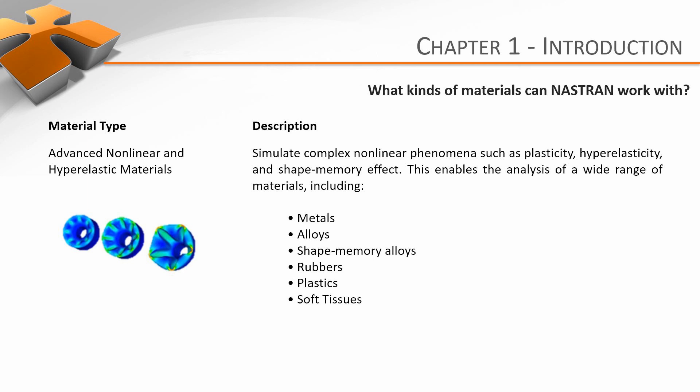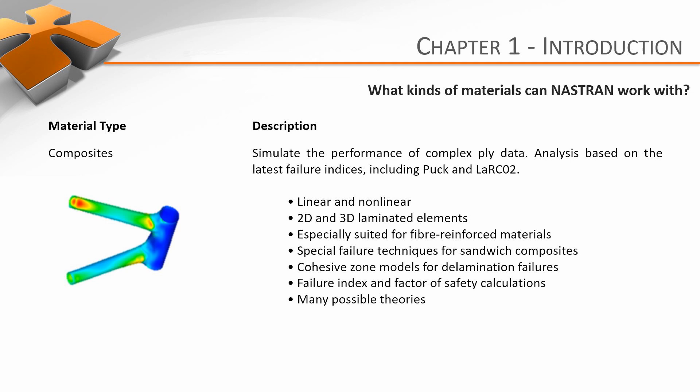Metals, alloys, shape memory alloys, rubbers, plastics, soft tissues — if you can describe how the material behaves to Nastran, then it can incorporate that into its analyses. And lastly, and fantastically, Nastran can deal with composites. This is really fascinating as typically analyses involving composites are considered difficult. Whether they're 2D laminates or some kind of 3D configuration, if you can describe how the composition and orientation of the composite material goes, Nastran can incorporate it into its analysis.